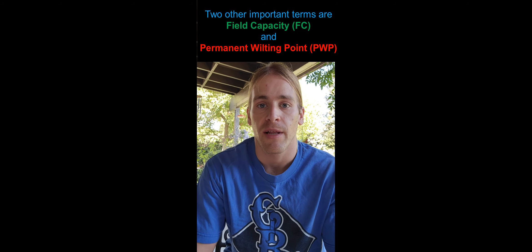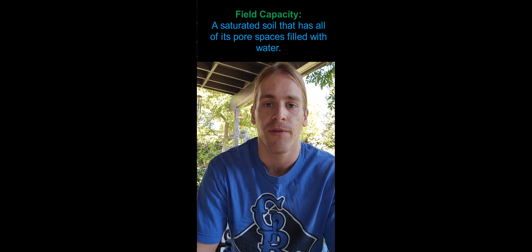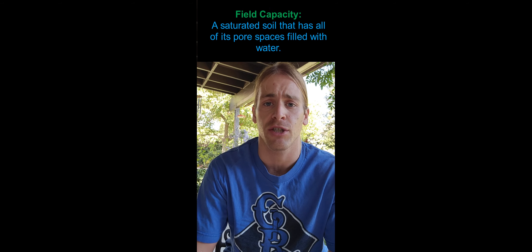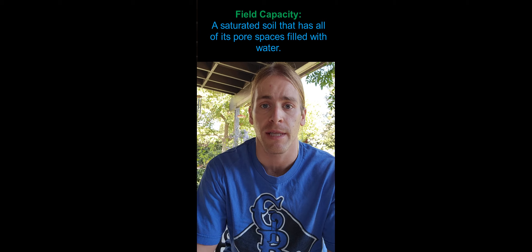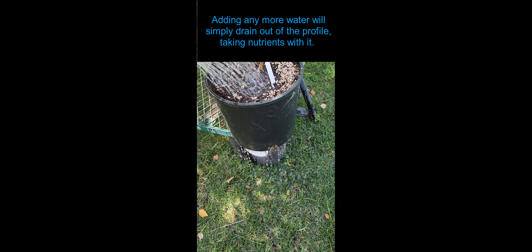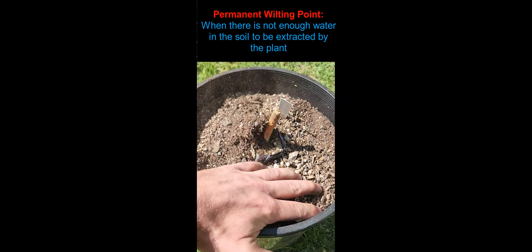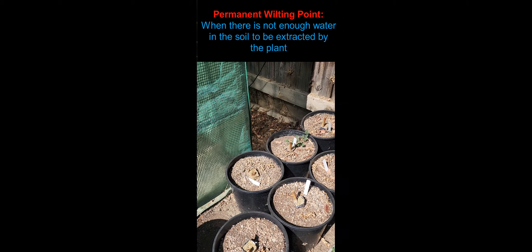When we talk about plant available water, we need to consider two other things as well. One is known as field capacity and the other is called permanent wilting point. Field capacity is the same as having a saturated soil — all the pore space in the entire soil profile is filled up with water. If you were to add any more water to this saturated or field capacity soil, instead of it collecting in the profile, it is going to begin to drain out the bottom, pulled downward by gravity. Permanent wilting point is the point at which there is not enough water in the soil to be extracted by the plant.